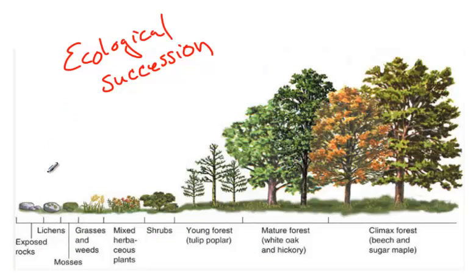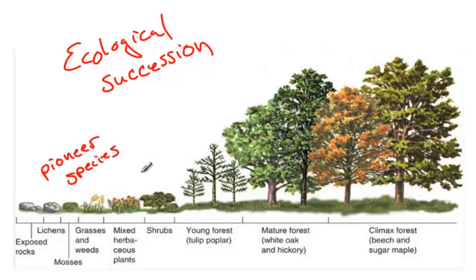To summarize: ecological succession begins with exposed rocks following some sort of catastrophic event in the ecosystem — a forest fire, a landslide, or a volcanic eruption. With time, lichens, which can grow without any soil, begin to move in as a pioneer species. When the pioneer species die and decompose, they leave behind a small amount of soil. As more soil accumulates, larger and larger plants are able to grow, until finally you get a young forest that continues to leave behind more and more soil, allowing even larger forests to develop.